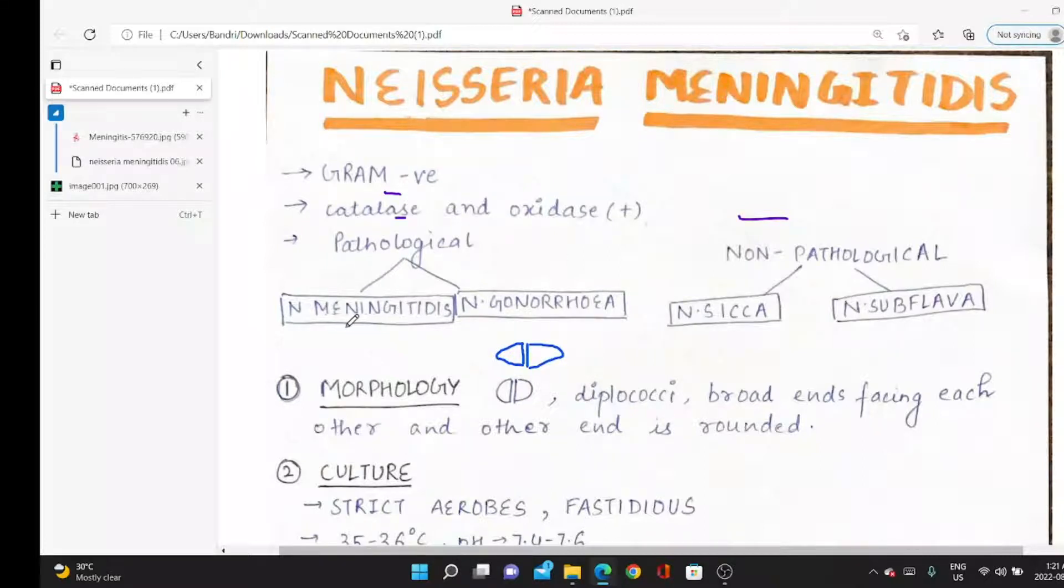Pathological strains: we have two. Neisseria meningitidis can cause two types of infection—meningitis or septicemia, which is more severe. Neisseria gonorrhoeae causes gonorrhea, a sexually transmitted disease. It's the second most common STD; the first is due to chlamydial infections.